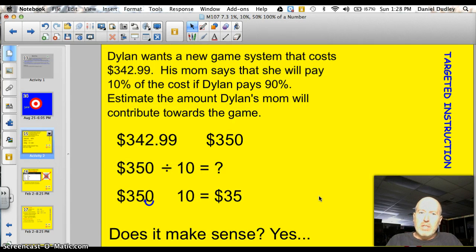Dylan wants a new game system that costs $342.99. His mom says that she will pay 10% of the cost if Dylan pays 90%. Estimate the amount Dylan's mom will contribute towards the game. Well, the first thing we do is say $342.99 is about $350. He says, Mom's going to pay 10%, so we're going to divide by 10. So I take $350 divided by 10.